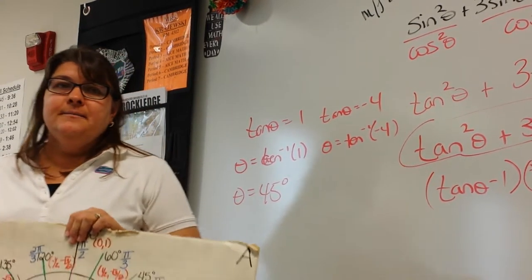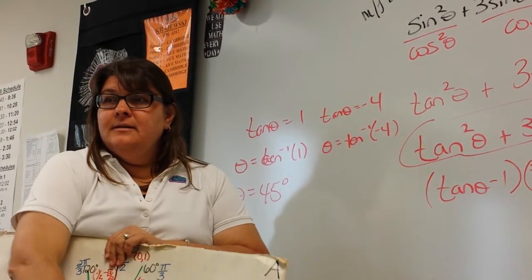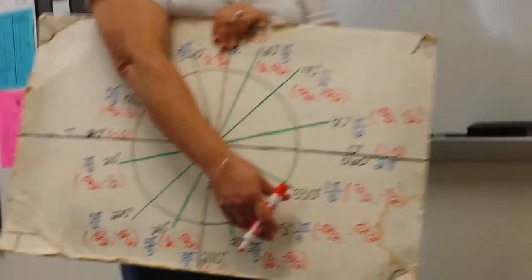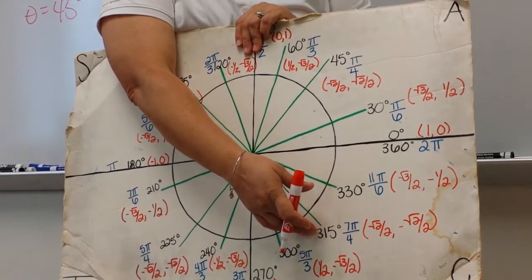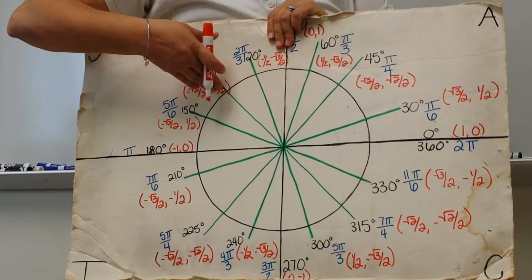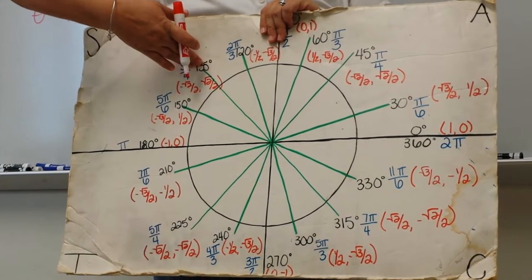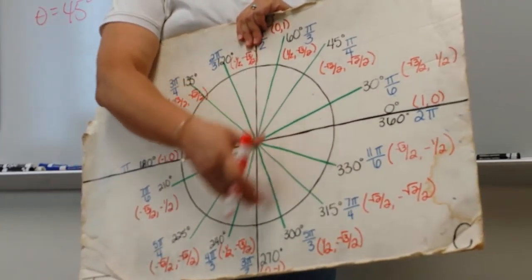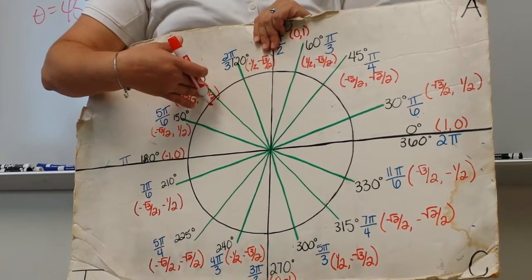What about this guy — tan to the negative one of negative four? You get negative 76. Negative 76 is located down here — outside our range of 0 to 180. We know negative 76 is in the fourth quadrant, but the other corresponding answer has to be in the second quadrant. From negative 76, how far do I go to get there? 180 degrees more.